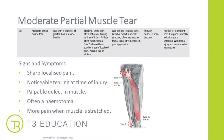The moderate partial muscle tear involves slightly more fibres with similar but more pronounced symptoms. There will be sharp localised pain, and noticeable tearing at the time of injury — the client may say they felt something tear, rip, or ping. There's quite often a haematoma, so you'll see bruising around the area, and pain when the muscle is put under stretch.